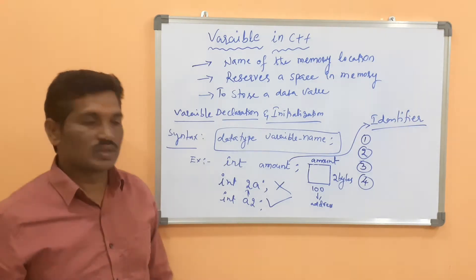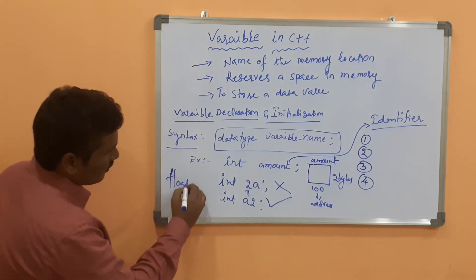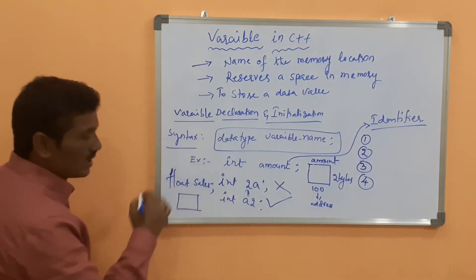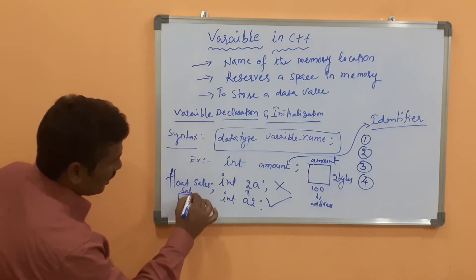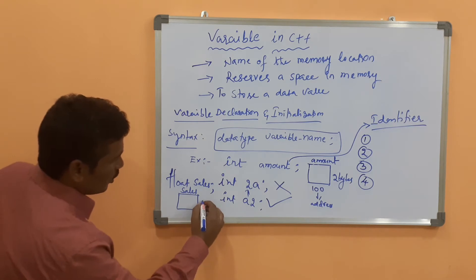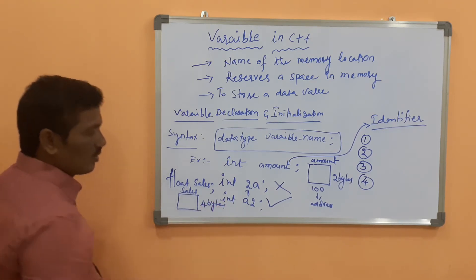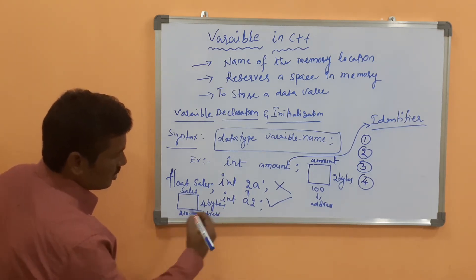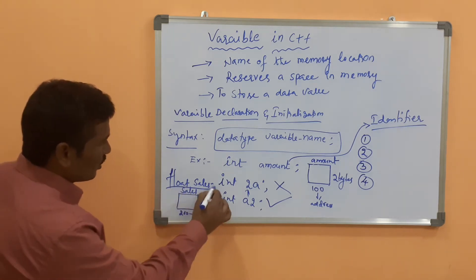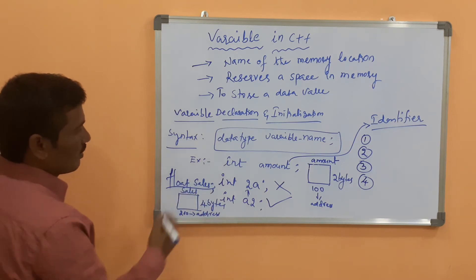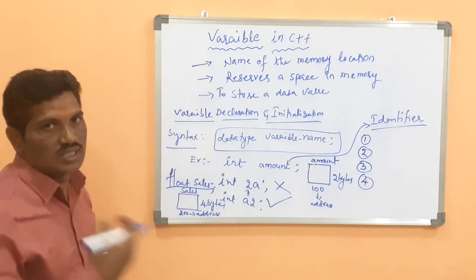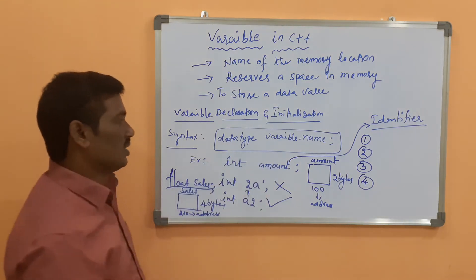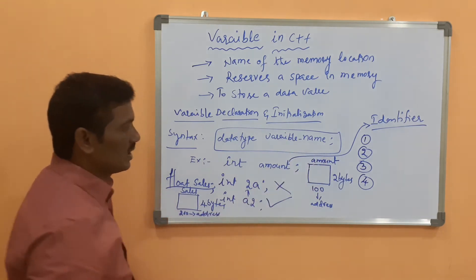For example, 'float sales' - float is a data type, the variable name is 'sales'. How much memory? Generally floats take 4 bytes. Some address location is 200. This is only how I told you - declaration of variables: data type, variable name, followed by the semicolon.